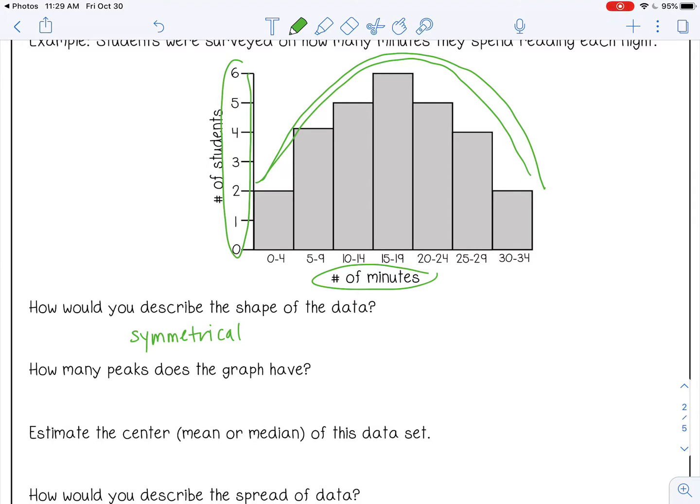And then how many peaks does the graph have? It has one peak, which means it's unimodal, has one mode.